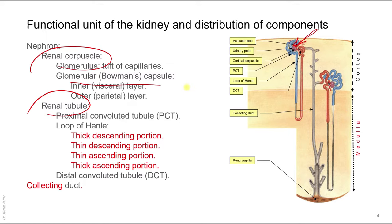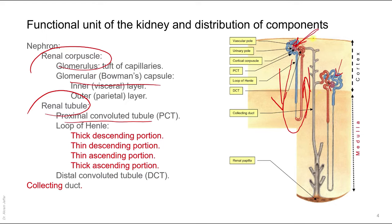Filtration takes place in the renal corpuscle, but reabsorption and excretion take place in the renal tubule. This is formed of a proximal part — the proximal convoluted tubule, which is folded on itself — and then it gives rise to a U-shaped loop called the loop of Henle, formed of a descending part and an ascending part, each of which can have a thick and thin segment. Then there is the distal convoluted tubule, which is also folded on itself.